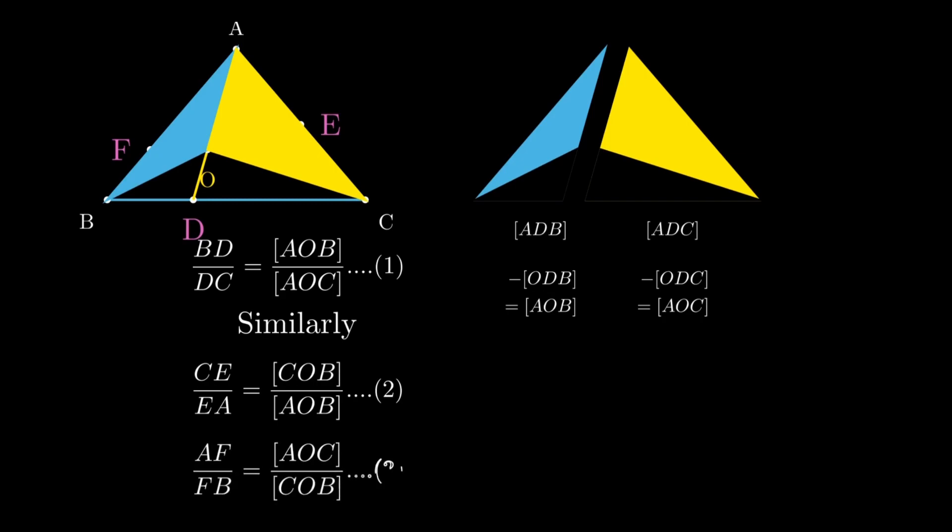So we got three ratios equal to three areas of triangles. And now we are ready to prove the final result.